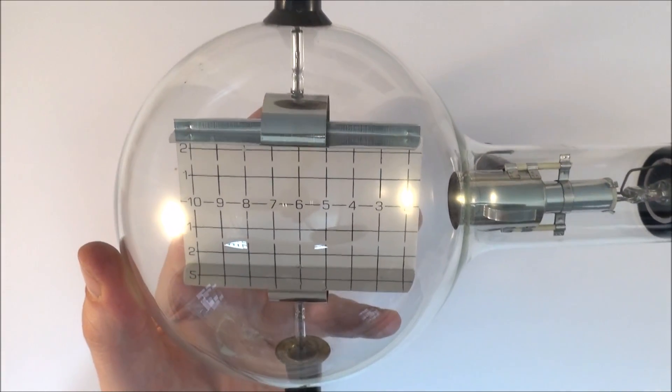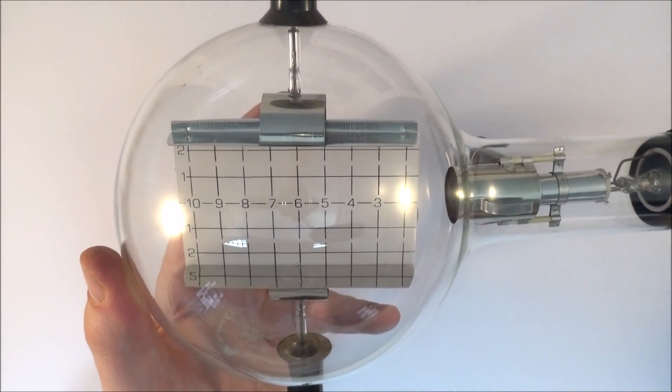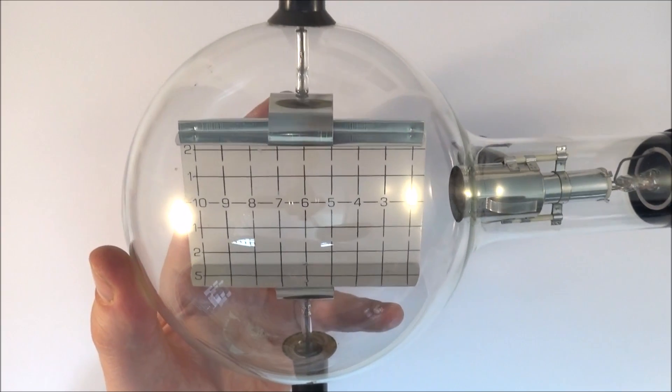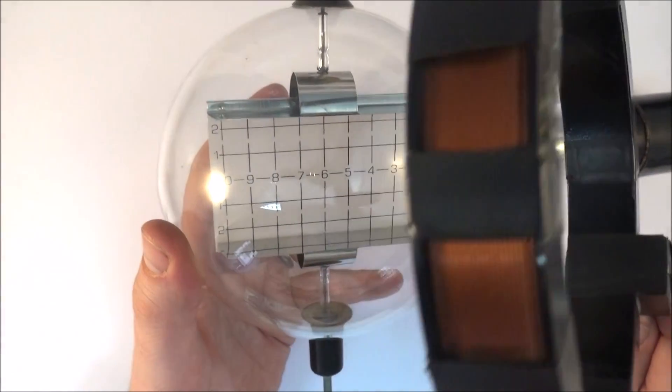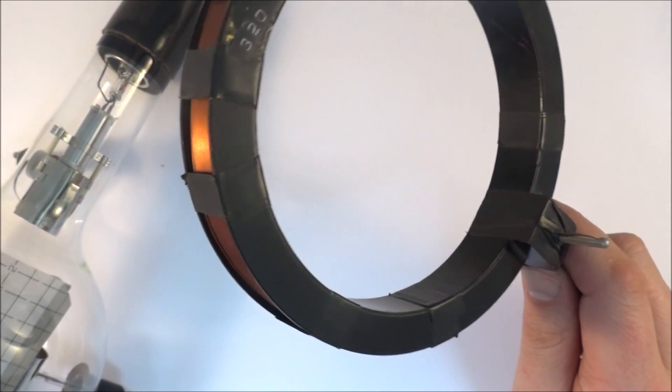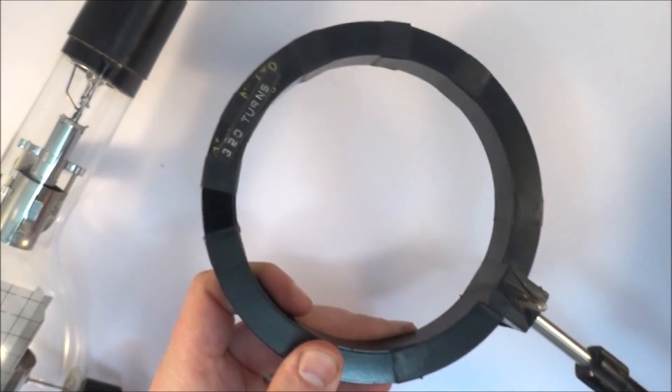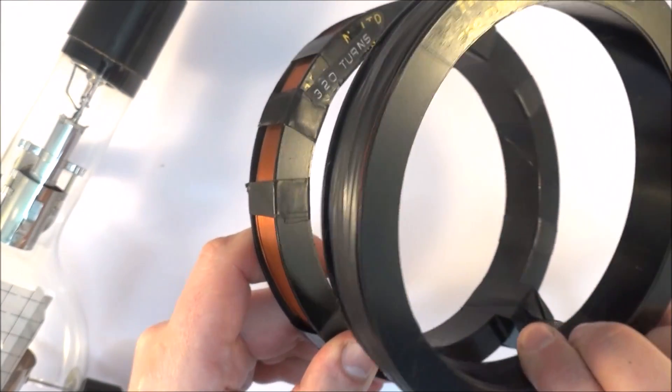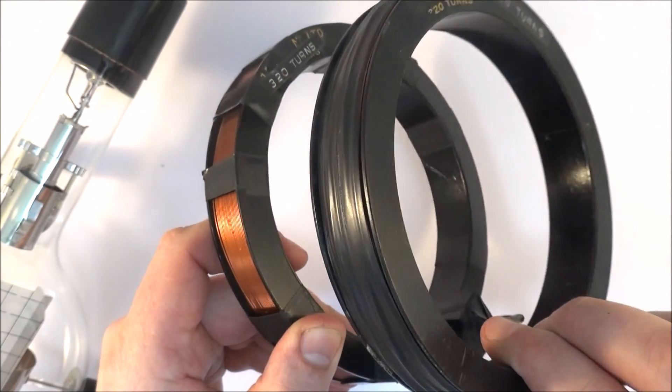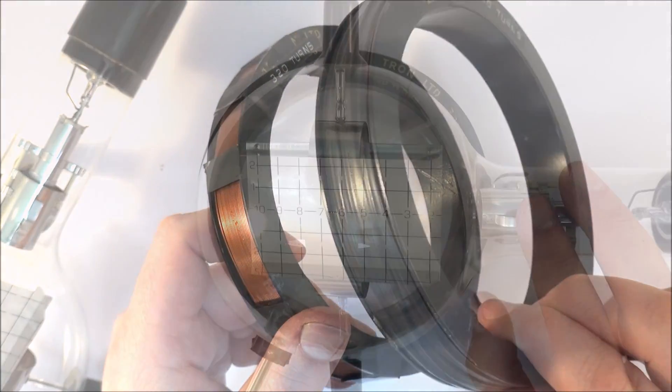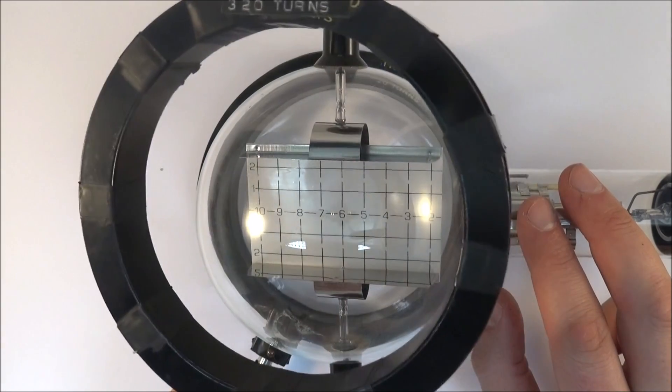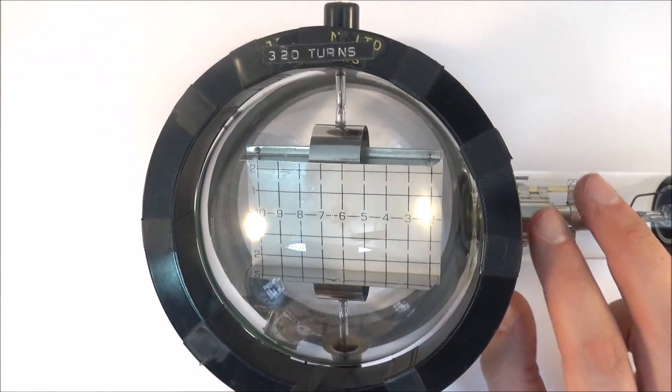The other thing we can do is apply a magnetic field and to apply this magnetic field we use a couple of coils like these. These things here are called Helmholtz coils and they're basically to provide a magnetic field inside this tube.